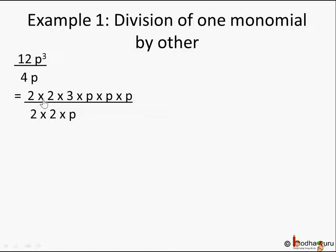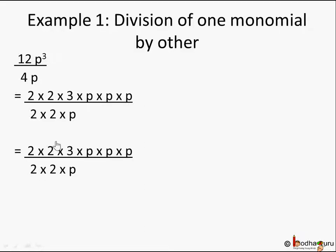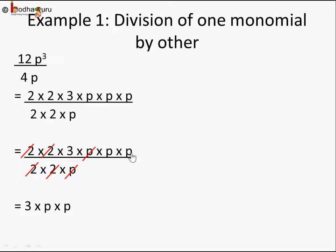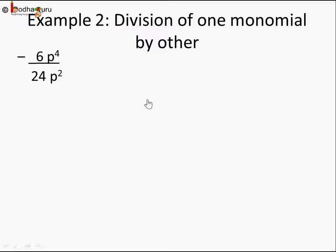The denominator 4p becomes 2 × 2 × p. In the next step, cancel the common factors between numerator and denominator: each 2 cancels, and one p cancels. What's left in the numerator is 3 × p × p, and the denominator becomes 1. So the result is 3 × p × p, which is 3p². Therefore, 12p³ divided by 4p equals 3p².